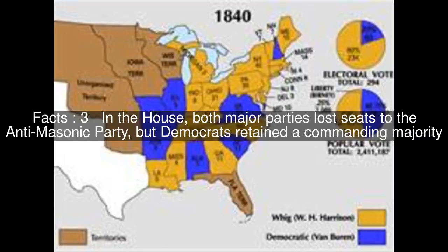In the House, both major parties lost seats to the anti-Masonic party, but Democrats retained a commanding majority.